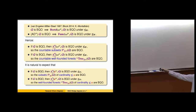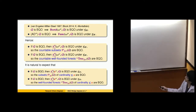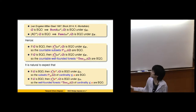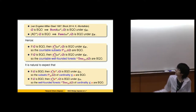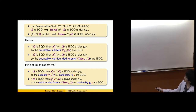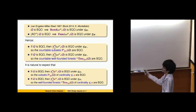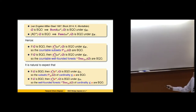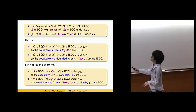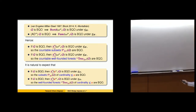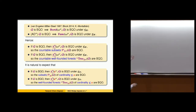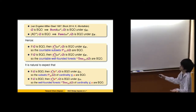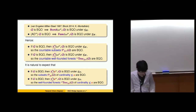It is natural to expect that if Q is BQO, then delta-0-1 measurable functions from kappa-omega to Q are BQO, isomorphic to subsets of cardinality at most kappa. And for delta-0-2, maybe the Wadge degrees are isomorphic to well-founded forests of cardinality at most kappa. So we can naturally expect these kinds of results can be shown.